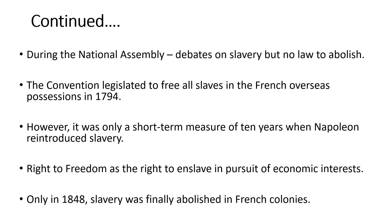Later the Convention, that is the Jacobin regime, legislated to free all slaves in France's overseas possessions in 1794. It was one of the most revolutionary social reforms of the Jacobin regime. However this abolition of slavery became only a short-term measure of ten years when Napoleon reintroduced slavery, as plantation owners and businessmen understood their freedom as including the right to enslave African Negroes in pursuit of economic interests. Only in 1894 was slavery finally abolished in French colonies.